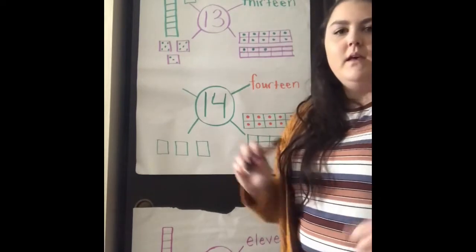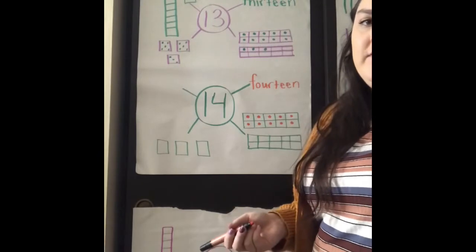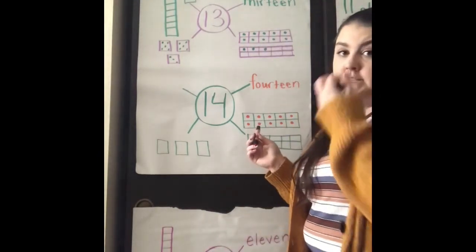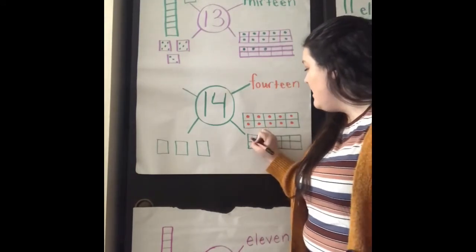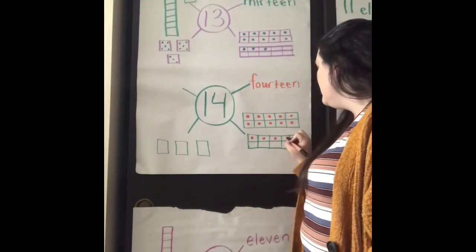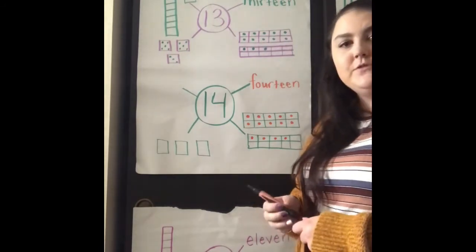Okay, I already have 10 dots in my first 10 frame. I know that those are 10 already so I'm going to start counting at 10. And I'm going to say 10, 11, 12, 13, 14, and that's 14 dots.